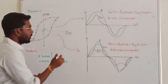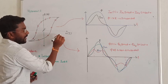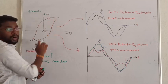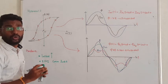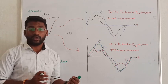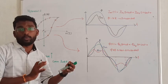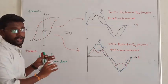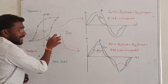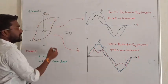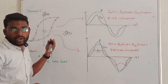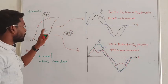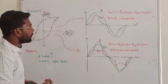Due to the non-linearity of the transformer, if we apply a current value of zero, the magnetic flux is not zero — that is residual flux. There will be some amount of energy stored even when the current value is zero. We can draw this BH curve between magnetic flux density and field intensity, or equivalently between flux versus current. Both representations have the same properties.